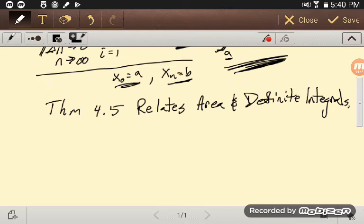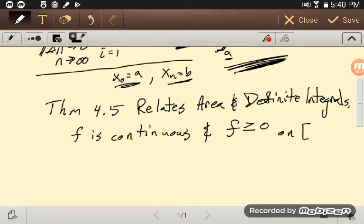So in Theorem 5, it mentions that F is continuous and F is non-negative, so F is greater than or equal to zero on a closed interval AB. So it's continuous and greater than or equal to zero on AB.